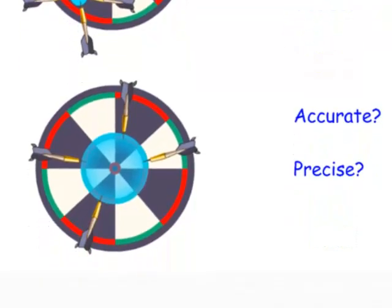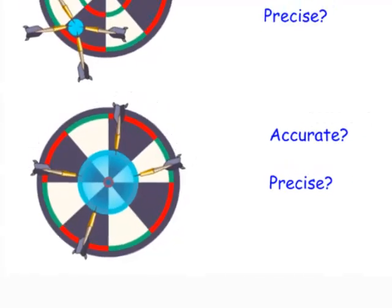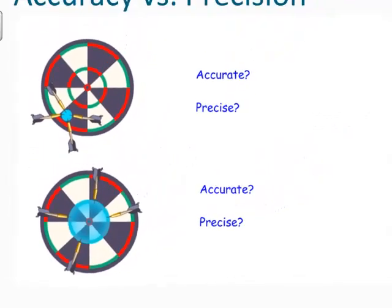In the next target, four darts were thrown but they don't lie very close to each other, so there's no precision. However, when we look at the circle described by their pattern, the bullseye is right at the center. If we average them together, we would get the bullseye. So these are actually accurate, but they're not precise — they're kind of all over the place.